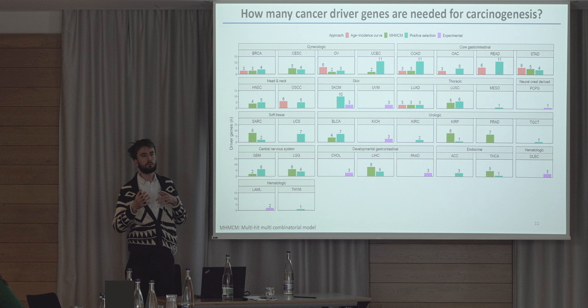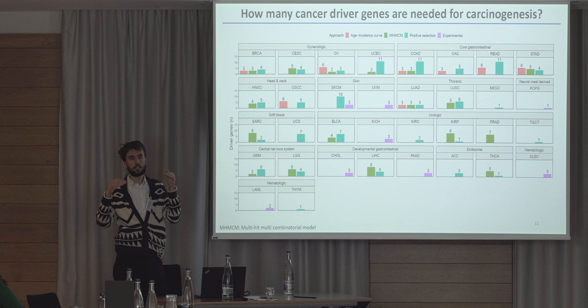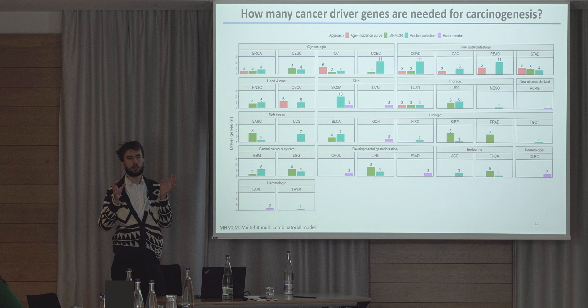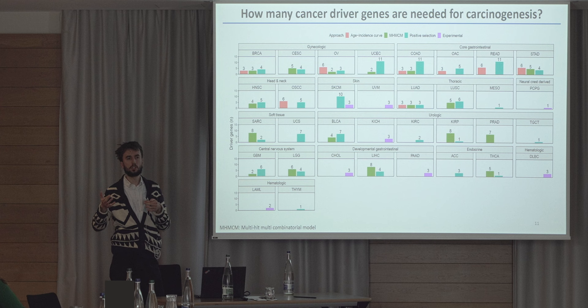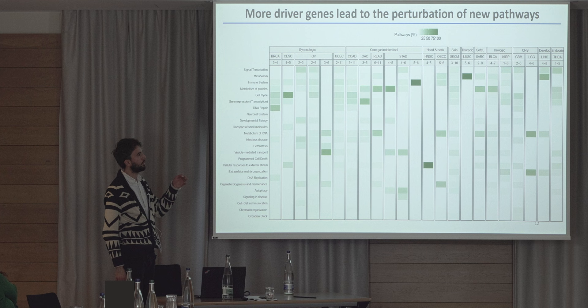We used thresholds of four and five drivers in our list and compared the pathways perturbed using different numbers of drivers. Basically, if we see that with four drivers we perturb the same pathways as with five drivers, we would use four drivers as the number needed, because we see the same effect using fewer driver genes. We did this across cancer types for which multiple driver numbers were suggested, and in most cases more drivers would actually perturb more pathways. In very few cancer types did we see that fewer drivers do the same job as more drivers.